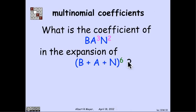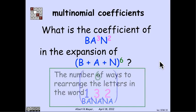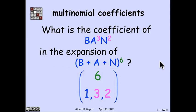Let's do another example. What's the coefficient of b·a³·n² if I expand this trinomial b plus a plus n to the sixth power? Well, now again, I have three to the sixth terms. How many of them involve a b, three a's and two n's? By the bookkeeper rule, it's the number of ways of rearranging the letters in the word banana. And by the bookkeeper rule, that's six with subscripts one, three, and two.